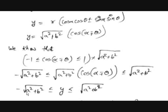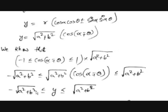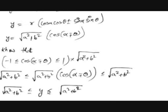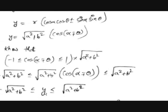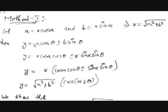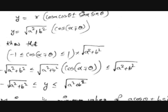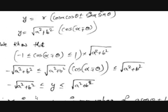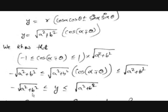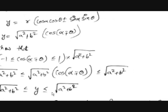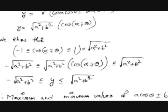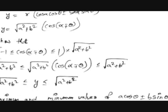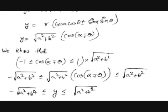Therefore, −√(a² + b²) ≤ a·cosθ ± b·sinθ ≤ √(a² + b²). The maximum value of a·cosθ ± b·sinθ is √(a² + b²) and the minimum value is −√(a² + b²). Now let's see the second way using differentiation, which is somewhat easier.